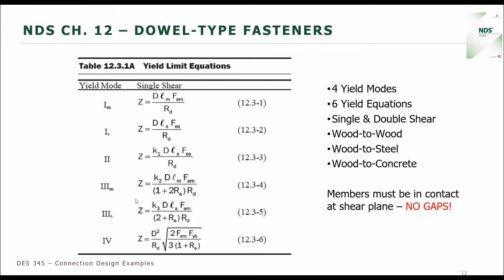So that's withdrawal — where we applied the force parallel to the length of the fastener. Now we're going to talk about shear or lateral loading, where the load is applied perpendicular to the length of the fastener. If you go into NDS Table 12.3.1A, you'll see these yield limit equations listed. We have six yield equations and four yield modes. We have Mode 1M and 1S for main and side member, and Mode 3M and 3S similarly — so six yield equations but four yield modes.